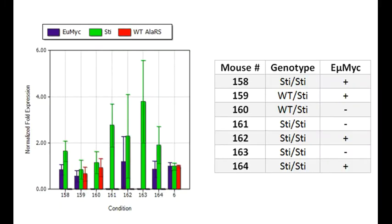Here is a summary of the data analysis. After compiling together the gene study and comparing the template samples to control mouse number 6, we found that 2 mice were heterozygous wild-type sticky animals, and 5 mice were homozygous sticky sticky animals. Of the 7 mice, 4 were EMU-MIC positive.